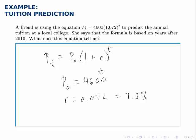And the fact that r is 7.2% tells us that the growth rate is that 7.2%. So the tuition at that college is growing by about 7.2% each year.